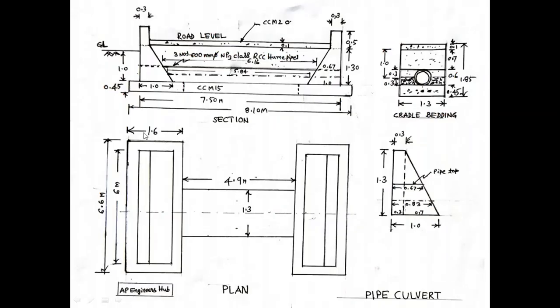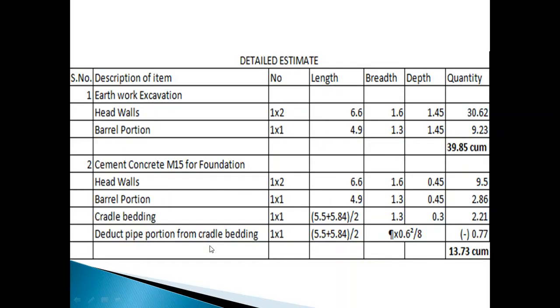Barrel portion: 4.9 by 1.3 meters. CCM15 for foundation. Headwalls: CMI headwalls excavation. Depth of foundation is 1.45.